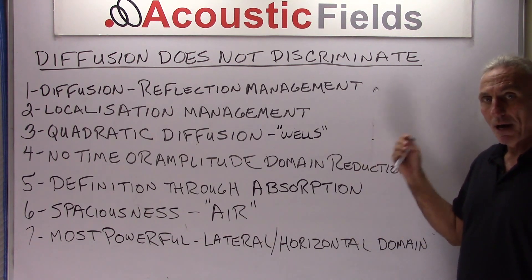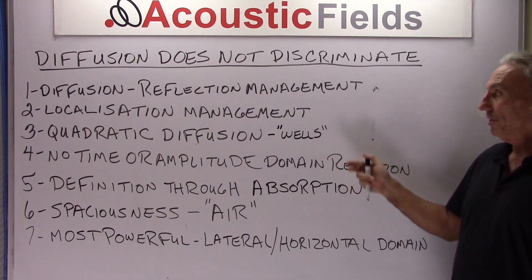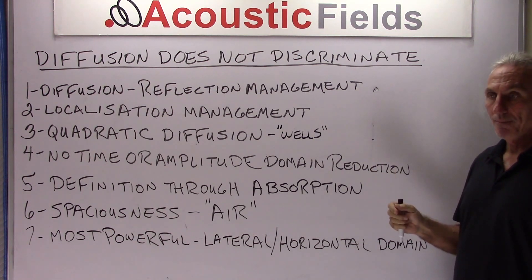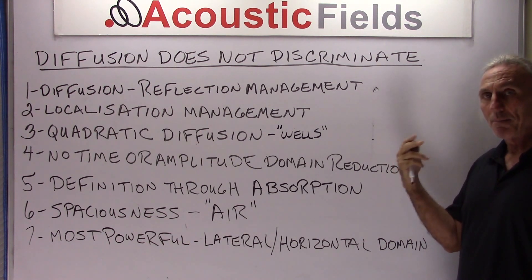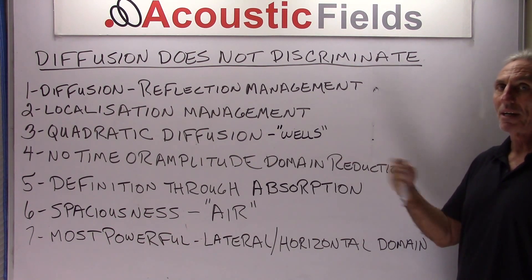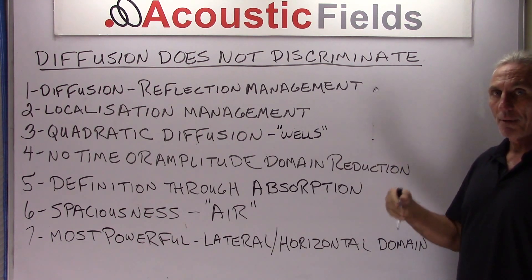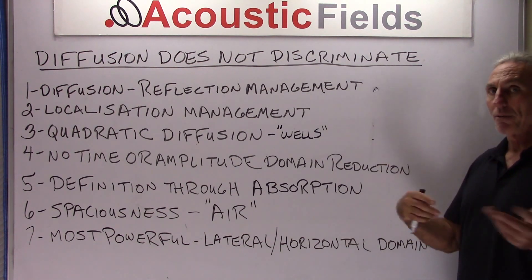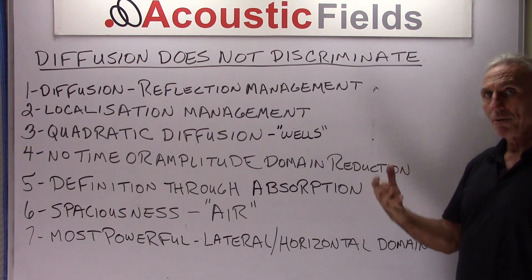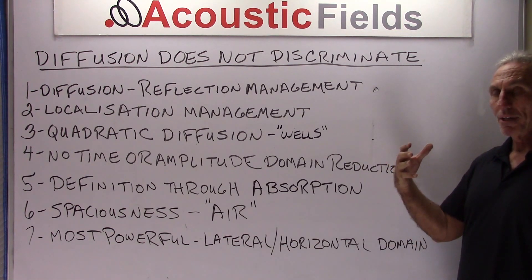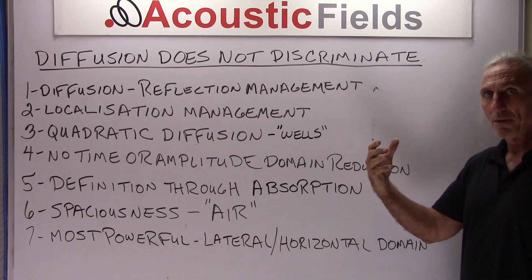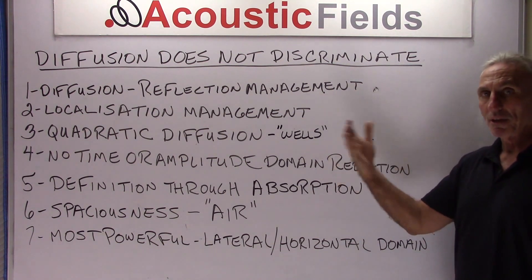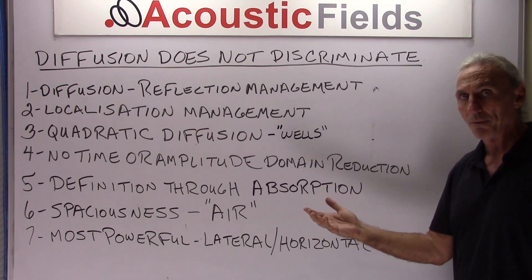It also helps eliminate the localization effect that you get with a wall, because we have this innate ability within our hearing system to recognize distances by the reflections bouncing back and forth between the surfaces of the room. What the quadratic diffuser does is it kind of confuses the brain a little bit so it can't localize, giving the perception that the room is larger and the surface area is farther away from you.